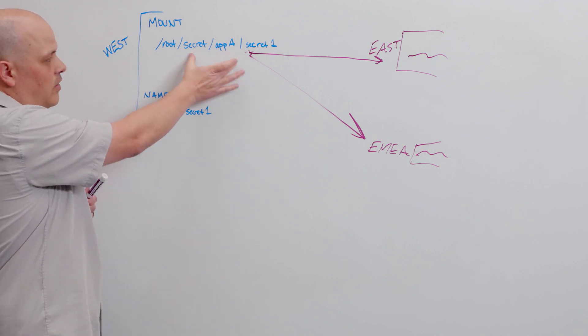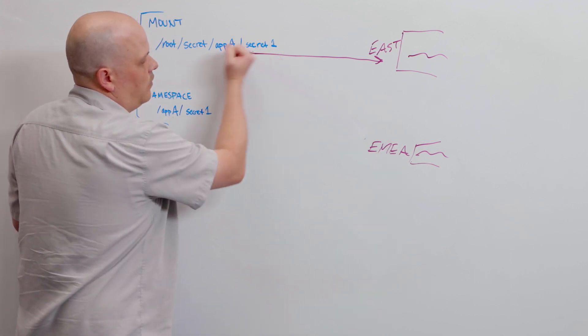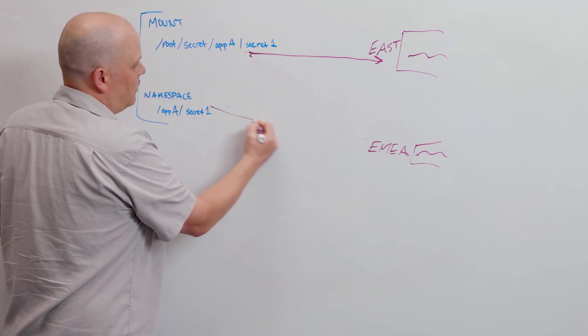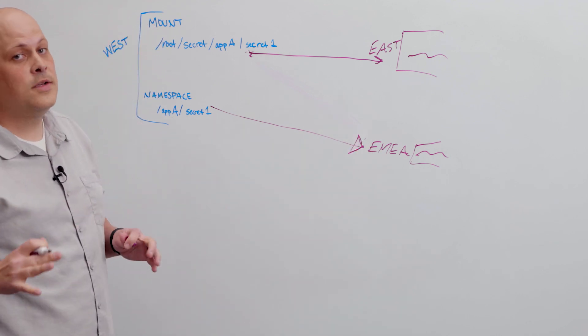I can say here at this mount, this secret can only go to the East Coast and nowhere else. And here in this namespace for this mount, I can say I want that to go to EMEA and nowhere else.